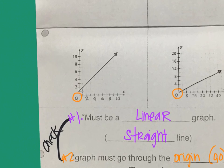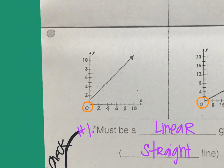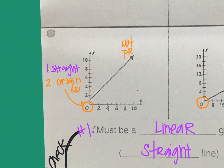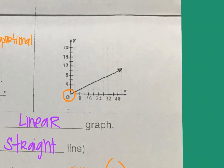So when I look up at this first graph, number one, it's straight. But number two, it does not go through the origin. That is a no. So this one would be not proportional because it does not go through the origin. That was the thing that got it wrong.